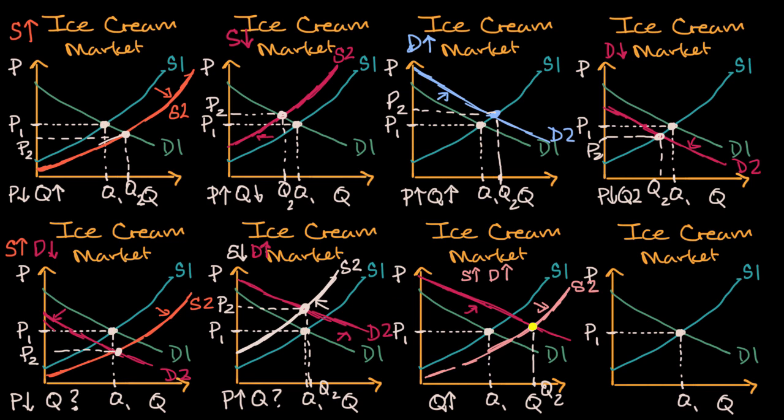But price now is ambiguous. Depending on how I drew these curves, I could make it look like the price is the same. I could make it look like it's gone up. Or I could make it look like it's gone down. And so the price here is ambiguous.